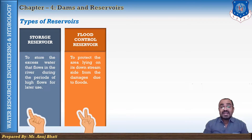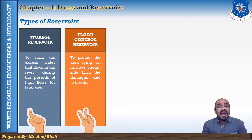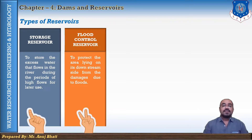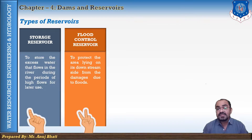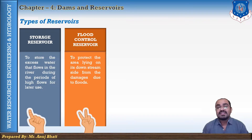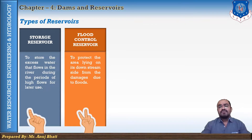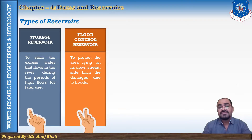A flood control reservoir holds some of the flood waters of a river during the rising flood and releases that water gradually at a safe rate when the flood recedes. The flood control reservoir serves only one purpose, that is flood control, and hence these are designated as a single-purpose reservoir.